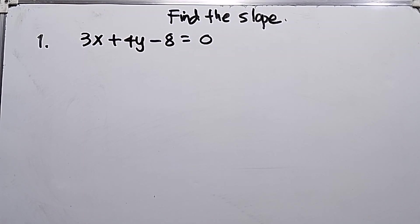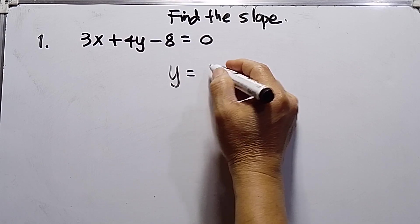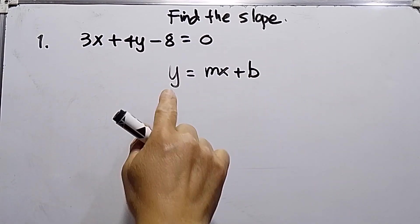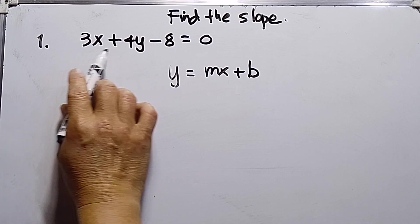Hello to my viewers. Today's topic is finding the slope using slope-intercept form, which is y equals mx plus b. By the way, this math is intended for grade 8 students. So I have here number 1: 3x plus 4y minus 8 equals 0.